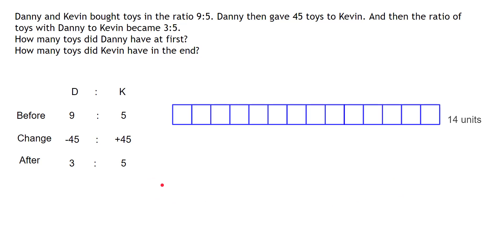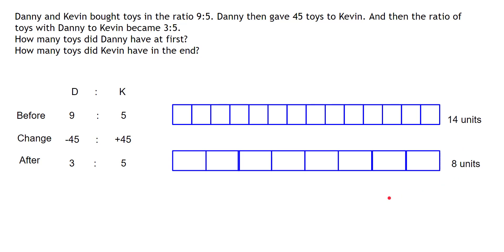I'm putting the 9 and 5 together as a total of 14 units, because that total is the one that is not changing. After the exchange it is 3 and 5, which is 8 units. You can see that the total size of these remains the same, although the individual unit sizes are different — the total size remains the same, indicating that the total number of toys with Kevin and Danny is unchanged.